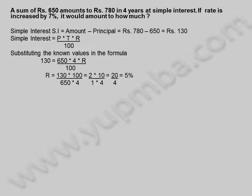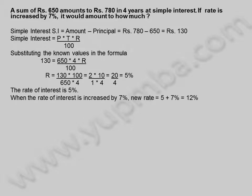Rate equals 130 into 100 divided by 650 into 4, which simplifies to 20 divided by 4, equal to 5%. The rate of interest is 5%.